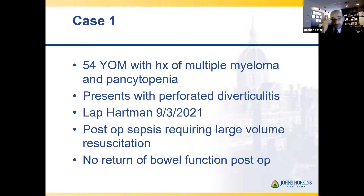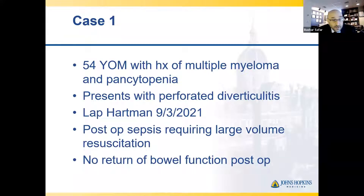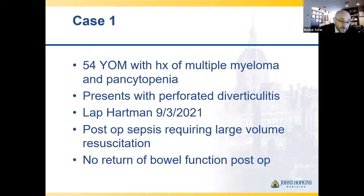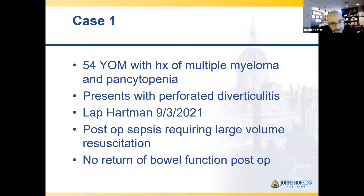Case number one is a 54-year-old male with multiple myeloma and pancytopenia. He presented last month with perforated diverticulitis — there was actually stool in his belly. We took him to the operating room on September 3rd, 2021 and performed a laparoscopic Hartmann. It went pretty smooth. Postoperatively, he was septic and was in the ICU on epinephrine and levophed drips.